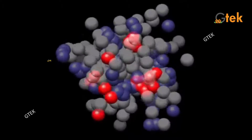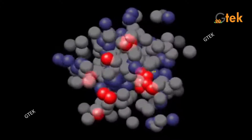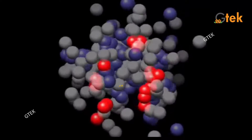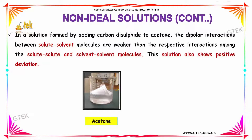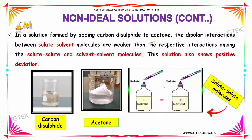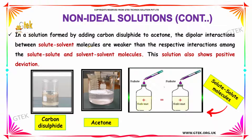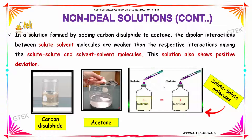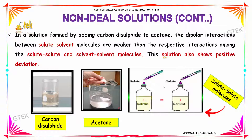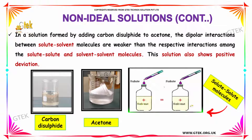Here is a 3D view of how solvent-solvent molecules interact. In a solution formed by adding carbon disulfide to acetone, the dipolar interactions between solute-solvent molecules are weaker than the respective interactions among the solute-solute and solvent-solvent molecules. This solution also shows a positive deviation.